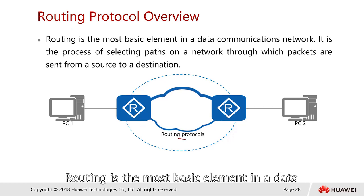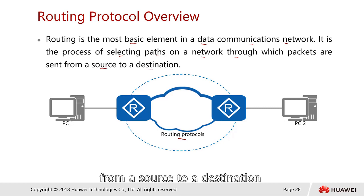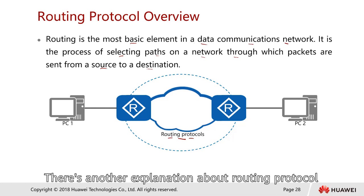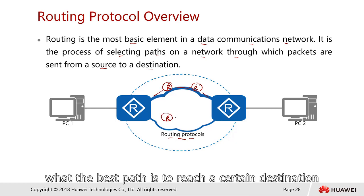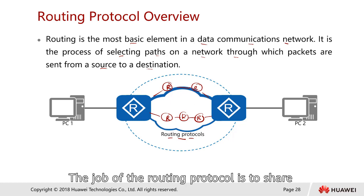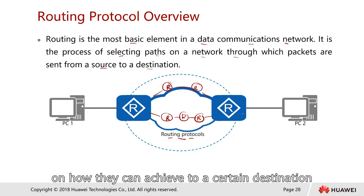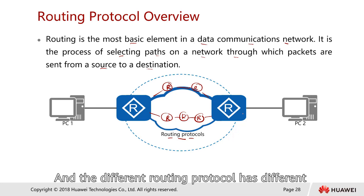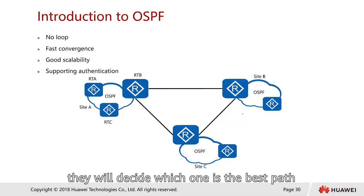Another protocol to discuss is the routing protocol. Routing is the most basic element in data communications - it's the process of selecting the path through which packets are sent from a source to a destination. Routing protocol is essentially the language that routers use to communicate with each other and figure out the best path to reach a certain destination. Different routing protocols have different selection criteria to determine the best path.